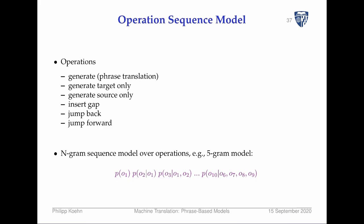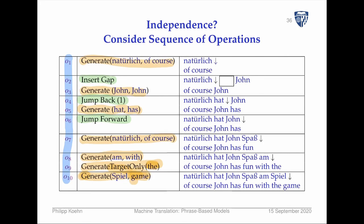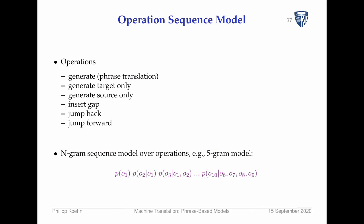So you have a sequence of operations. Now we're doing an n-gram model over this sequence of operations. What's the probability that a translation starts with operation one? What's the probability that the second operation follows the first? What's the probability of the third operation following the first two?